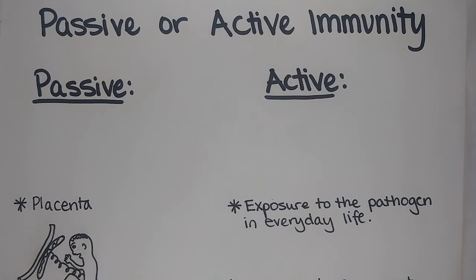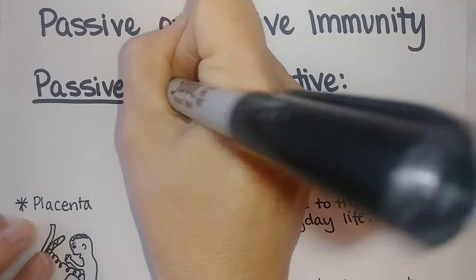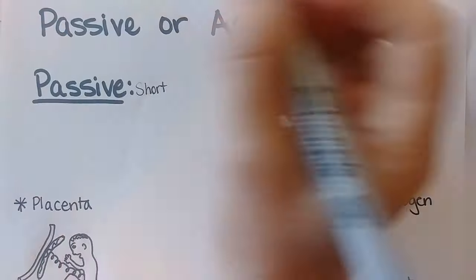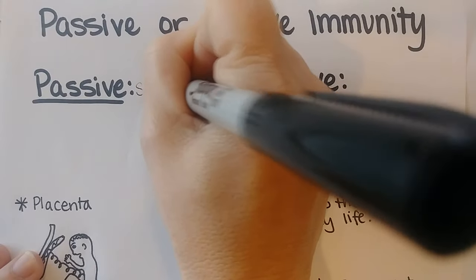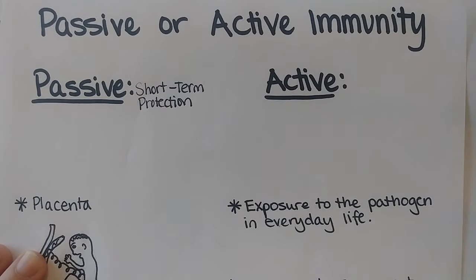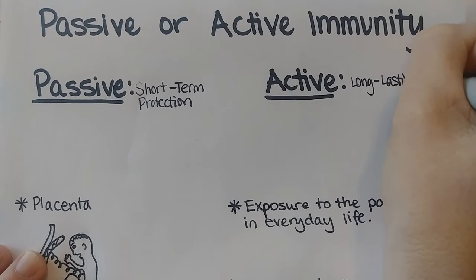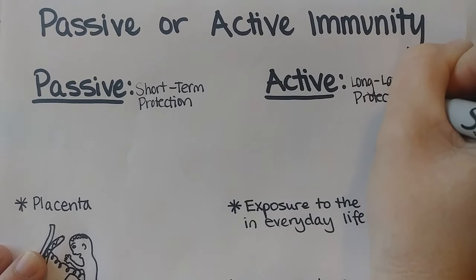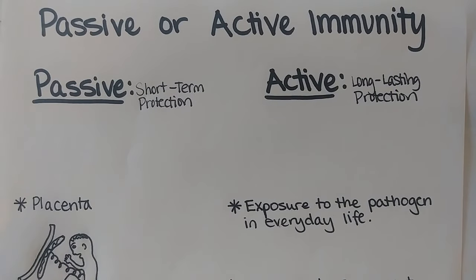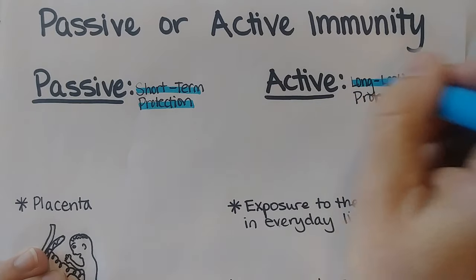Welcome to this video on passive or active immunity. I'm going to describe the differences. Passive immunity provides short-term protection, whereas active immunity provides long-lasting protection. That is one important way that these are different. This one is short-term protection; this one is long-lasting protection.